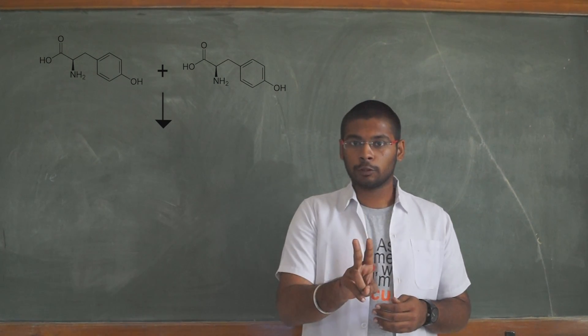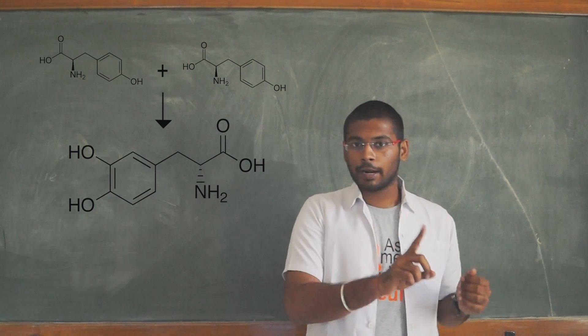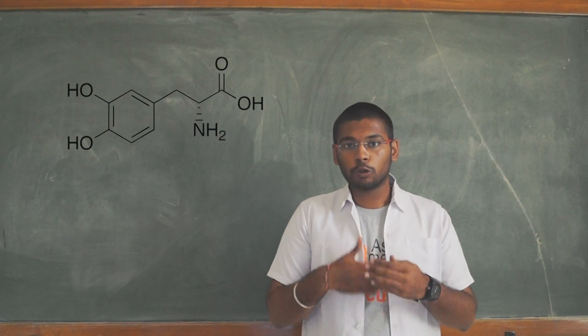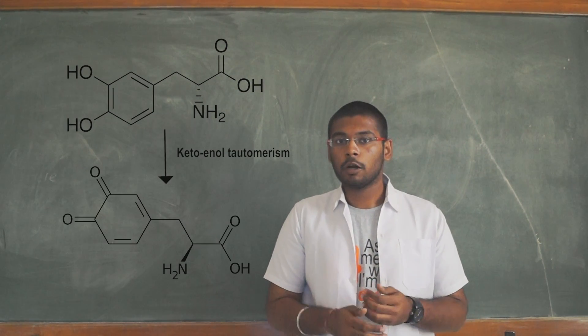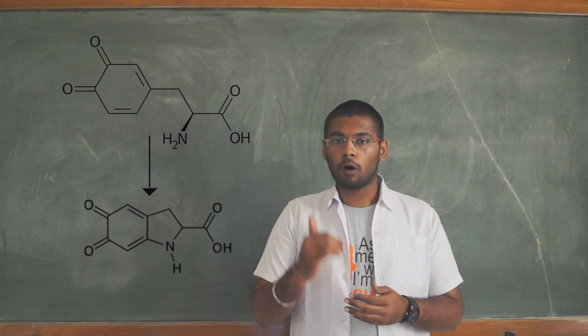DOPA has two hydroxyl groups. As I said earlier, diphenol. So tyrosine has only one hydroxyl group. This DOPA has two hydroxyl groups. DOPA, which exhibits keto-enol tautomerism and forms DOPA-quinone. DOPA-quinone is getting oxidized to form DOPA-chrome.